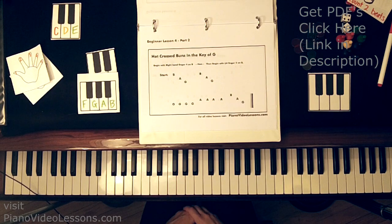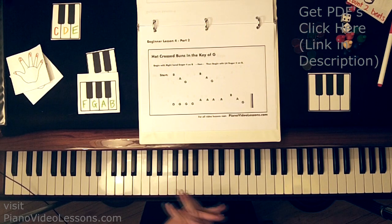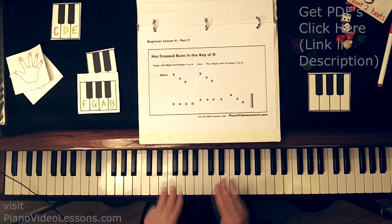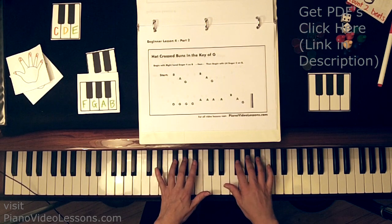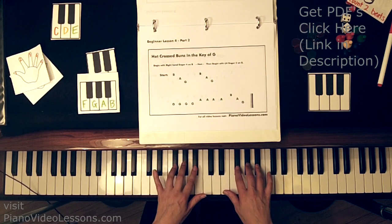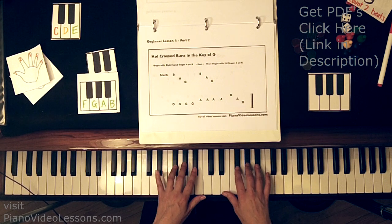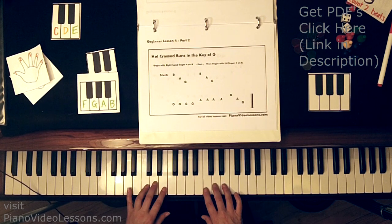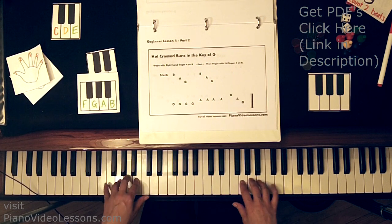Lovely. Alright, so now we know how to play the hot cross buns in three different keys. We can play it in the key of black keys, which could be the key of F sharp or the key of G flat. We can play it in the key of C, and we can play it in the key of G.